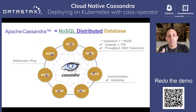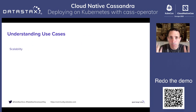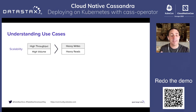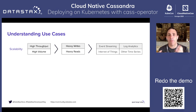Let's see the use cases you have with this database. First, the more capacity you need, the more nodes you add. If you also need more throughput, simply add new nodes. So Cassandra fits all the high-volume writes and reads use cases — could be time series, event streaming, blog analytics, or internet of things.